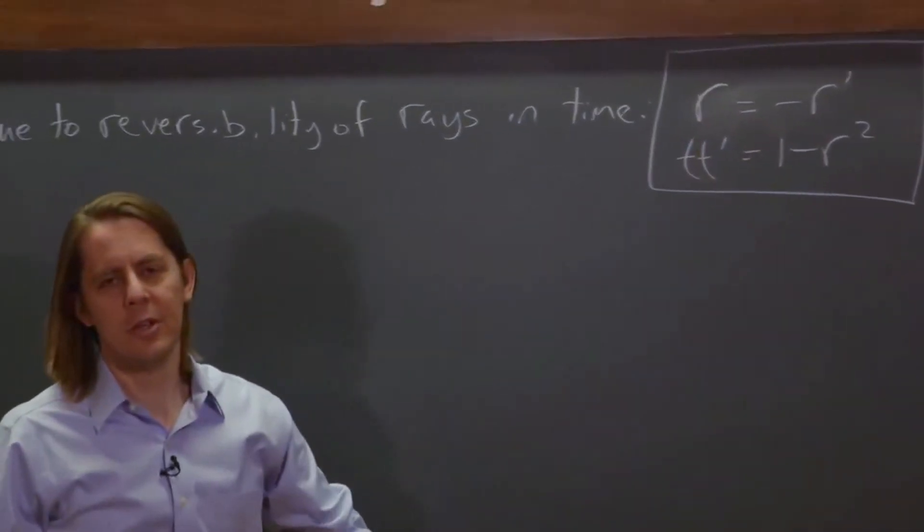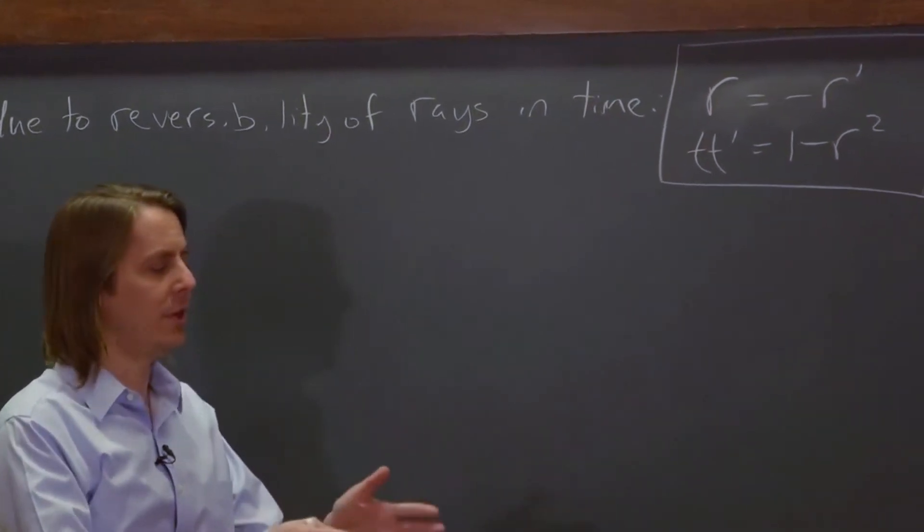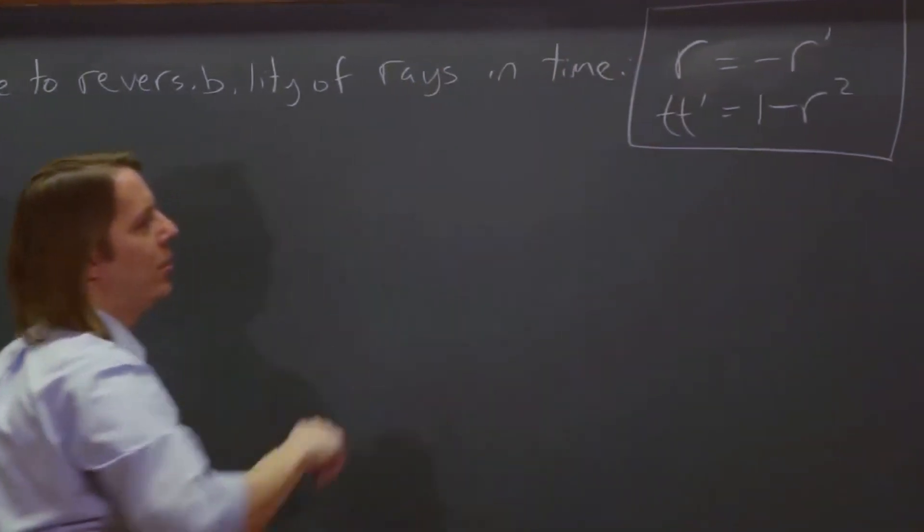But when we did Stokes relations or the Fresnel equations, we found often that r wouldn't equal negative r prime or minus r prime at least around normal incidence. But then this looks like I pulled it out of nowhere.